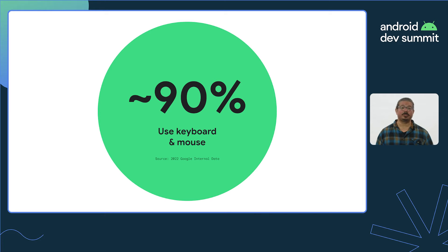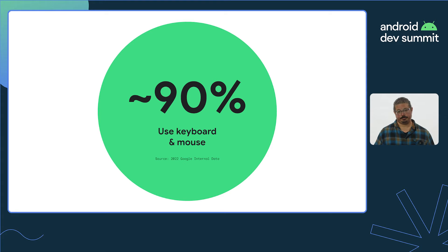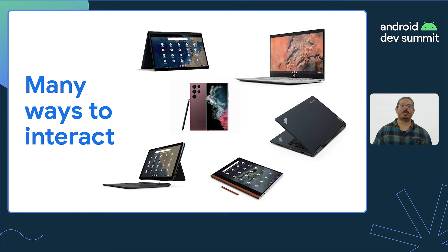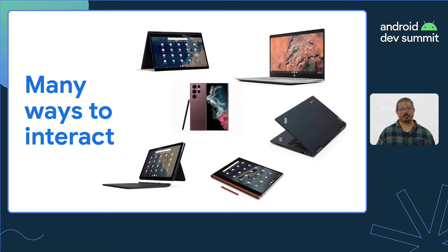One of the most important things to do for Chrome OS optimization is to ensure that apps have support for using input devices like keyboard, mouse, and stylus. About 90% of Chrome OS users interact with apps this way, and some devices don't even have a touch screen as an option. Support for input devices doesn't only matter for Chrome OS either — it's also common for users of large screen devices like foldables and tablets to use a keyboard, mouse, or stylus. If you only do one thing with your app, try to use it with a keyboard, mouse, and stylus to make sure the basic functionality works without a touch screen.